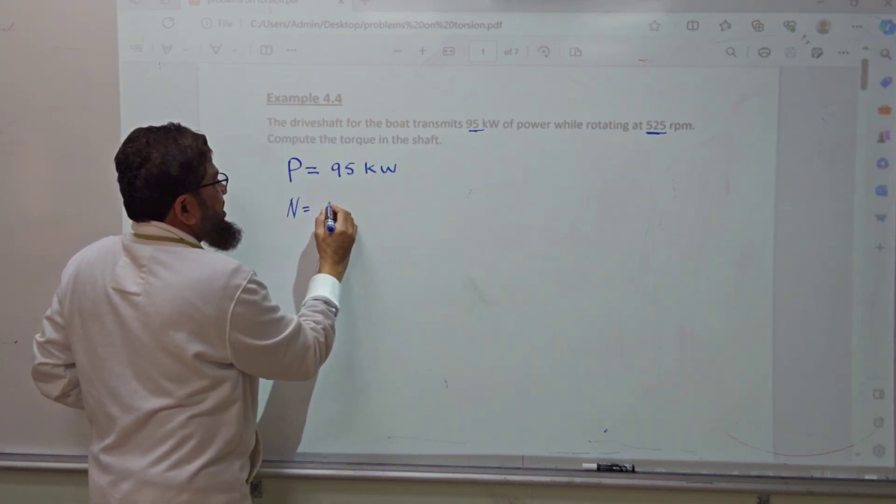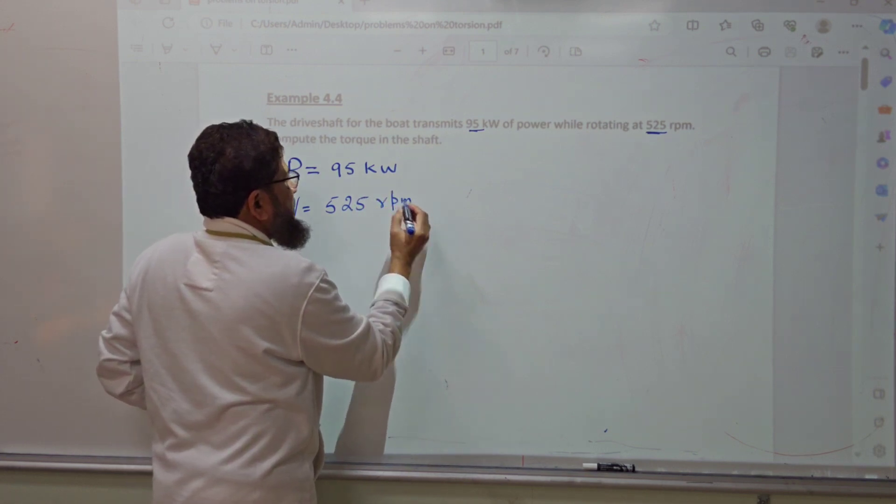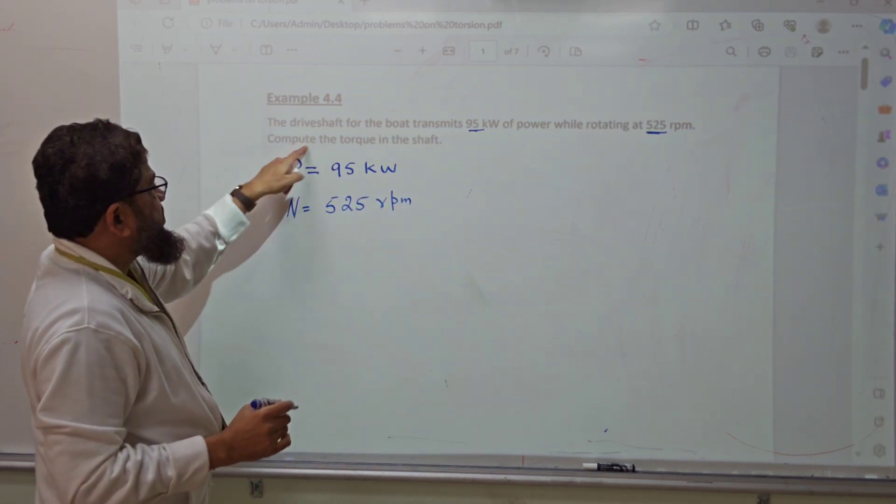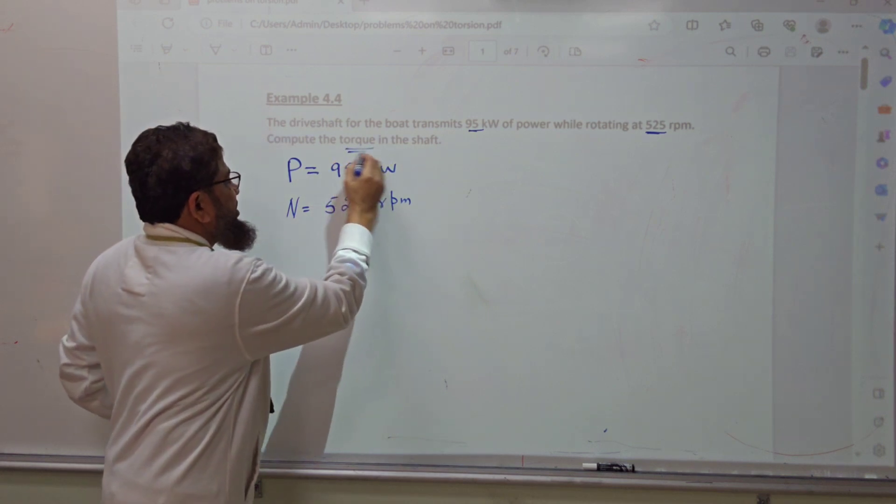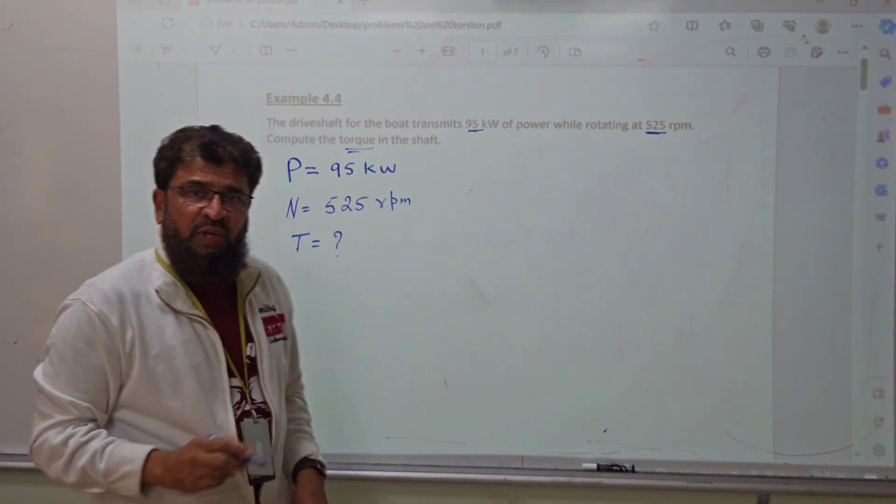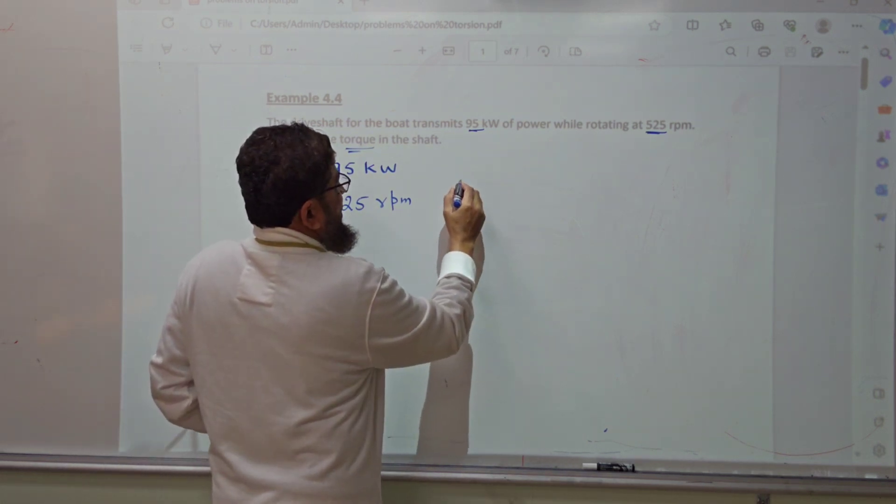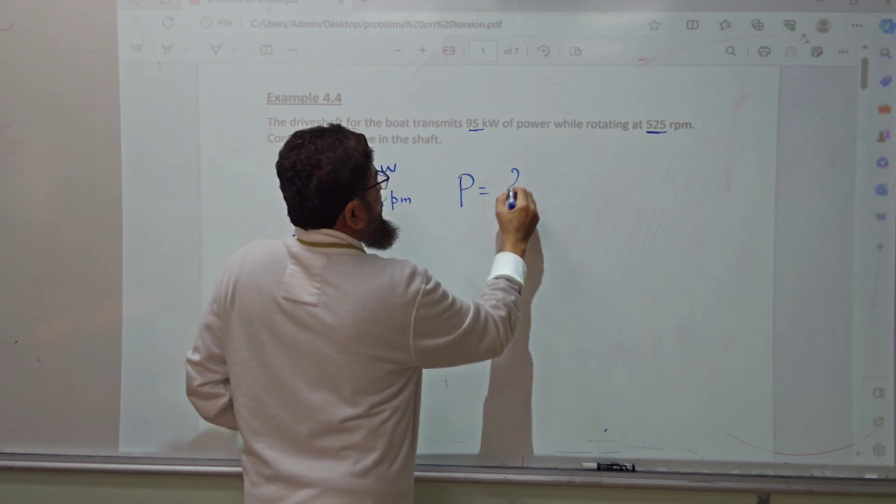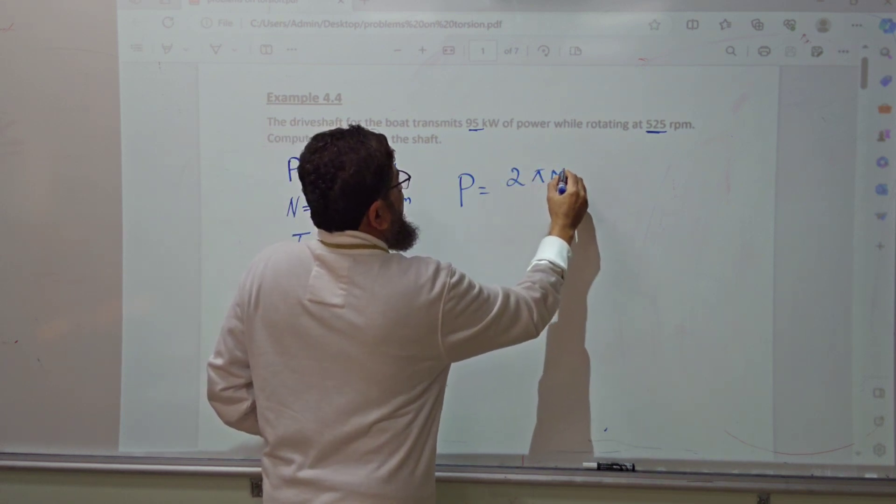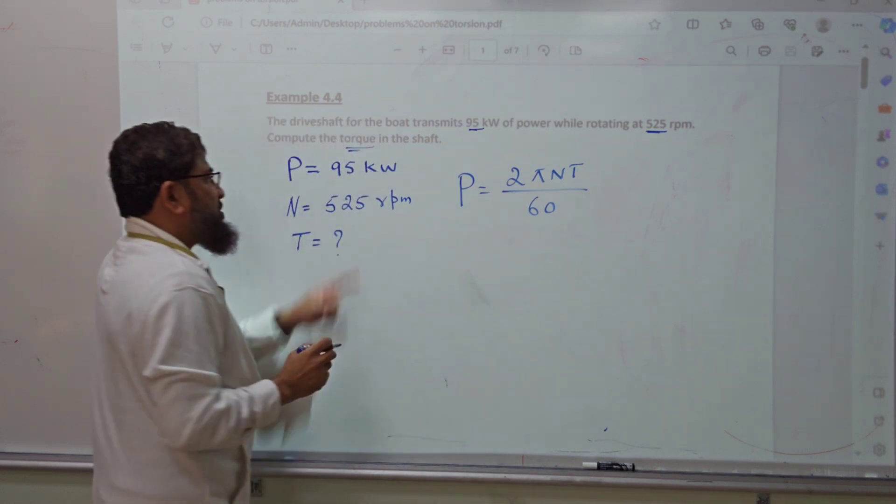We have n equals 525 rpm. Compute the torque in this shaft - that's what we need to find out. It's a very simple problem. The formula is P equals 2 pi n T divided by 60.